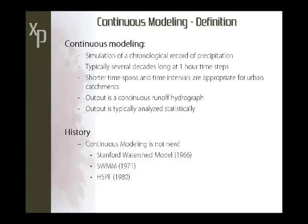The history of continuous modeling — it's not new. The first model I'm aware of is the Stanford Watershed model in 1966, the SWMM model from which XPSWMM is derived in 1971, and HSPF in 1980. The last two are currently in use as continuous simulation models. However, continuous simulation is newly being adopted throughout the country for stormwater management.